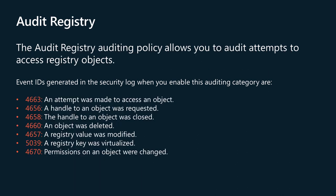The audit registry auditing policy allows you to audit attempts to access registry objects. A security audit event is generated only for objects that have system access control lists, SACLs, specified, and only if the type of access requested — such as read, write, or modify — and the account making the request match the settings in the SACL. If success auditing is enabled, an audit entry is generated each time any account successfully accesses a registry object that has a matching SACL. If failure auditing is enabled, an audit entry is generated each time any user unsuccessfully attempts to access a registry object that has a matching SACL. Items written to the security event log when this policy is enabled are listed in the documentation and on the screen.